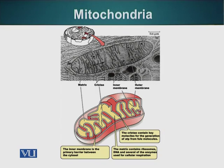The material present inside the mitochondria is called the matrix. The matrix has ribosomes — mitochondria have their own ribosomes. Also, mitochondria have their own DNA, so mitochondria can make their own proteins.